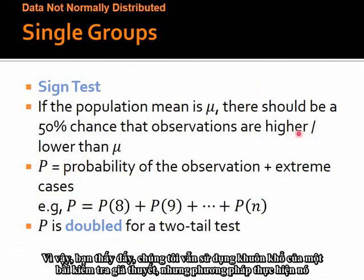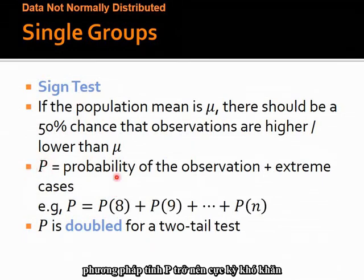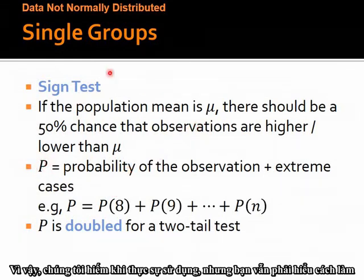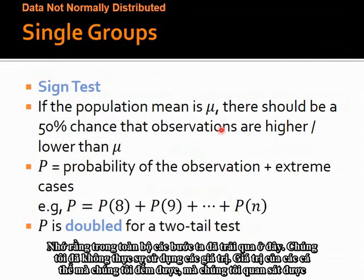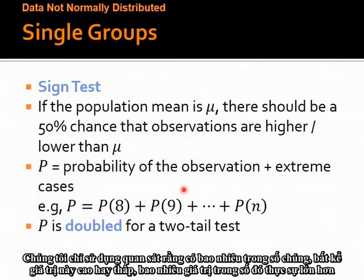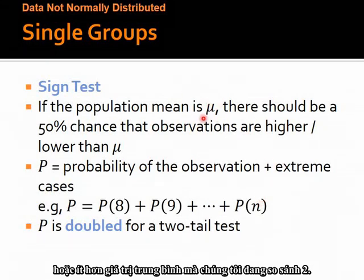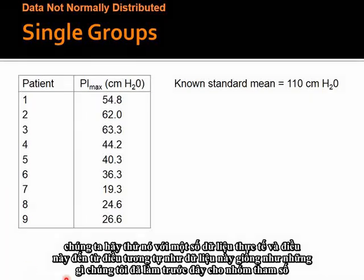You see, we still use the framework of a hypothesis test. But the method of going through it — the method of calculating the p — becomes extremely painstaking, so we seldom use the sign test in practice. But you still need to get an idea of how non-parametric tests work. Notice that throughout the entire process, we didn't use the actual values of the individuals. We only used whether how many of those values were greater or less than the comparison mean value.